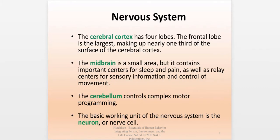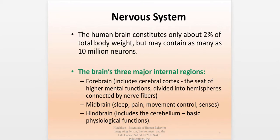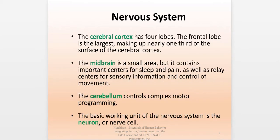The cerebral cortex, part of the forebrain, is certainly the largest part and has four lobes. The frontal lobe is the largest, making up nearly a third of the surface of the cerebral cortex. The midbrain controls centers for sleep, pain, and relay centers for sensory information, while the cerebellum controls complex motor programming.